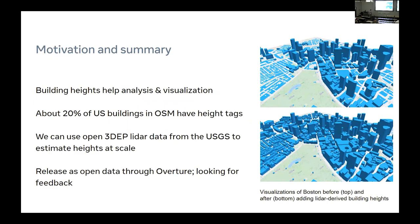Our initial use case was visualization — the 2.5D and 3D visualizations of maps. The top figure shows Boston as of April, with buildings tagged with building heights in OpenStreetMap, including physical height in meters, feet, or inches, as well as floors multiplied by a reasonable amount. The bottom shows the result after our tagging has been applied to the area — a big visual improvement with more buildings tagged.